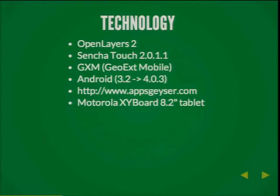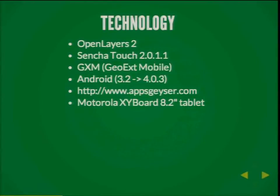The technology we used was OpenLayers 2, something after the 2.12 release. We used SenchaTouch version 2 and Mark's GeoExt mobile library. We started development on Android 3.2, which later got an upgrade to Android 4.03, which was quite an improvement — Android 3 was quite frustrating to develop against. Since we didn't use PhoneGap and they didn't want the parking citation officer to have unlimited internet access, we had to put a wrapper around the application to easily control internet access in the browser.